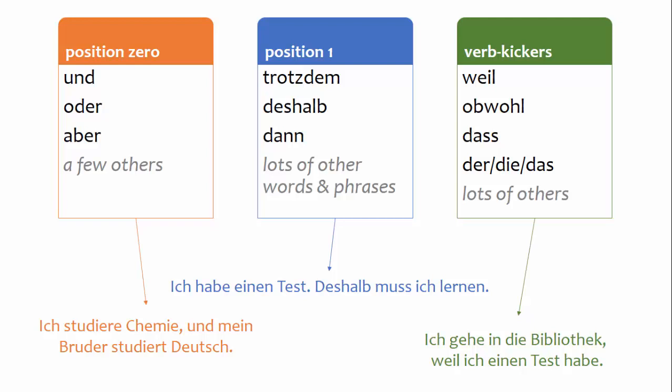To summarize: the conjugated verb is typically the second element in its clause. That can change when you use connectors, so it makes sense to pay attention to whether connectors affect verb position. Some connectors take position zero — in other words, you pretty much pretend they aren't there when figuring out word order. Others take position one, leaving the verb in its typical second position. A third group are verb kickers, moving the conjugated verb to the end of the clause.